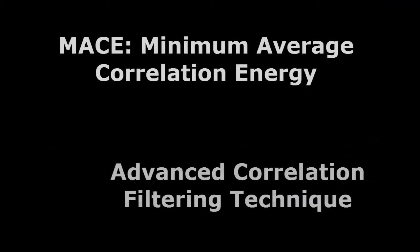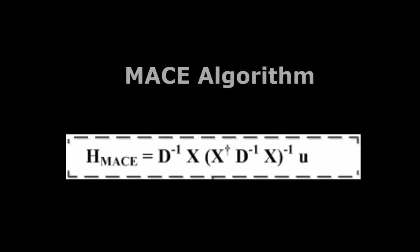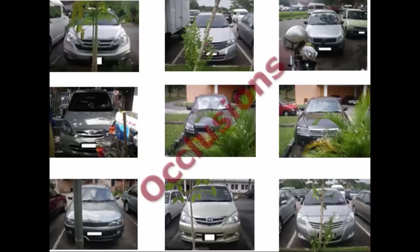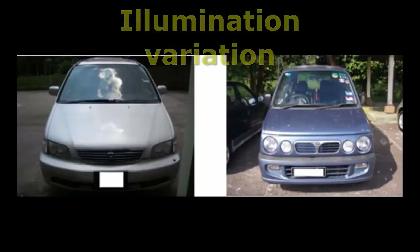MACE — minimum average correlation energy — is one of the advanced correlation filtering techniques. MACE is the algorithm that I implemented in this recognition project. The recognition system consists of a training module and a testing module. MACE is appealing in pattern recognition because it can deal with images with occlusion and illumination variation problems, and the training output is small.